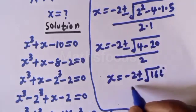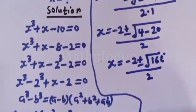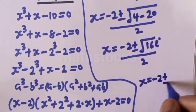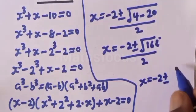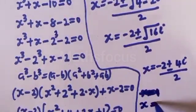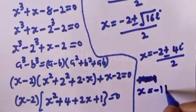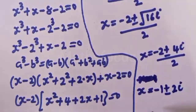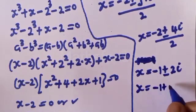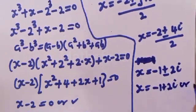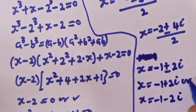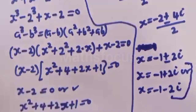Then s equals minus 2 plus or minus square root of negative 16 over 2, which gives s equals minus 2 plus or minus 4i over 2. So s equals minus 1 plus or minus 2i. That is, s equals minus 1 plus 2i, or s equals minus 1 minus 2i. But these two are complex solutions.